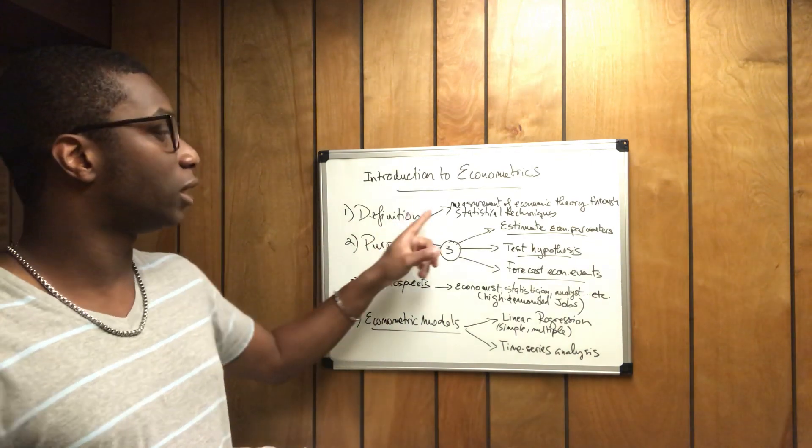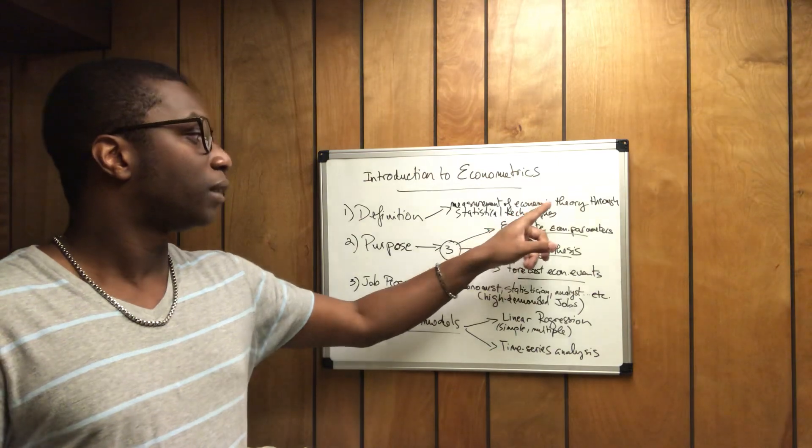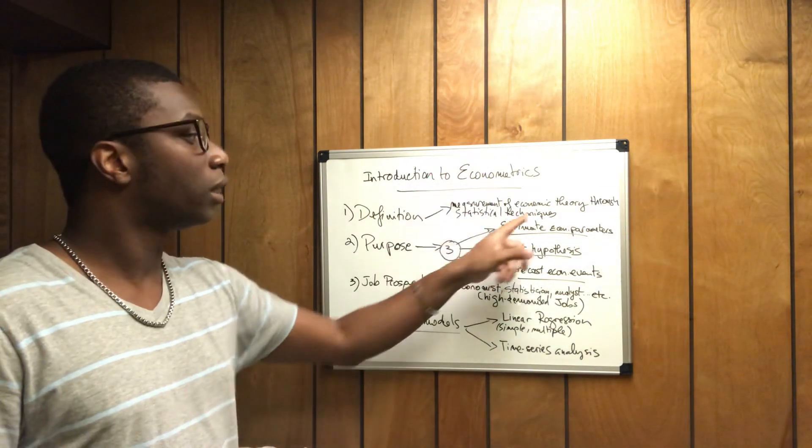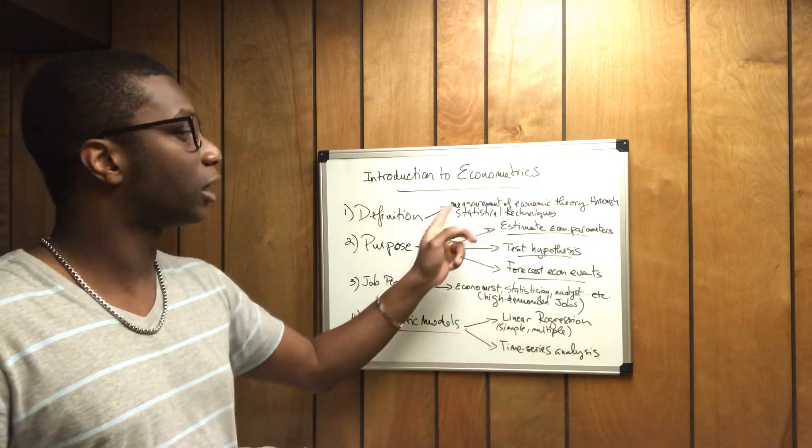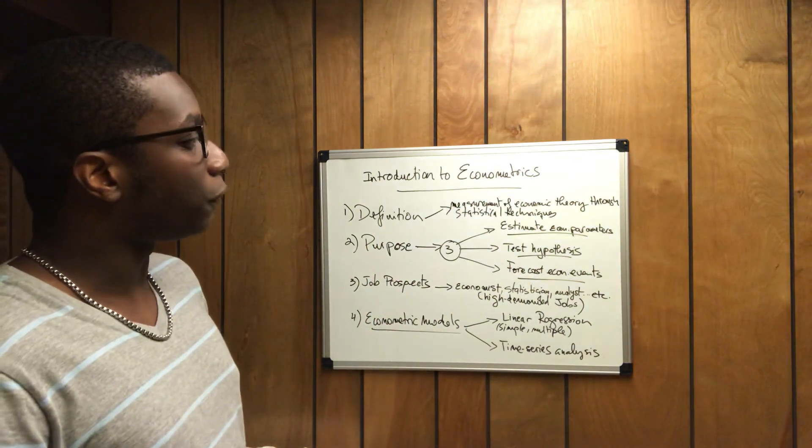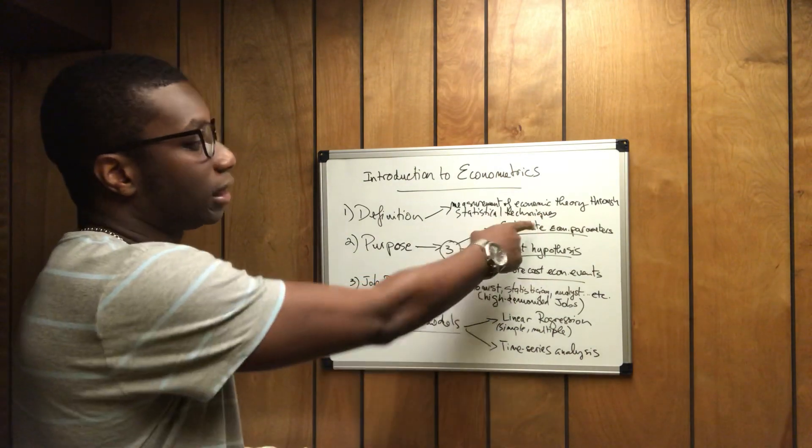So econometrics is the measurement of economic theory. As you see, econo stands for economic theory and matrix stands for measurement. And the way we measure economic theory is through the use of statistical techniques.